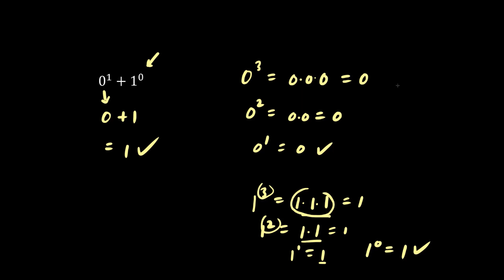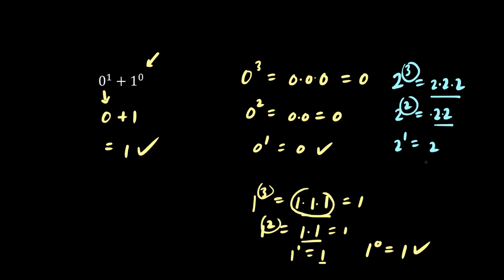It's interesting to note that when we have 2 cubed, we have 2 times 2 times 2, and 2 squared, we have 2 times 2, and 2 to the 1, we have just one 2. Each time we decrease the power by 1, we divide by 2. So 2 to the 0 is also 1, because 2 divided by 2 is 1. In general, most numbers to the 0 is just 1.